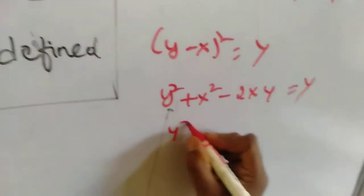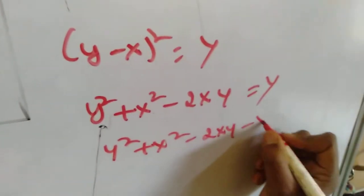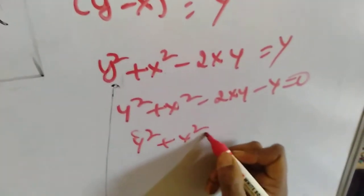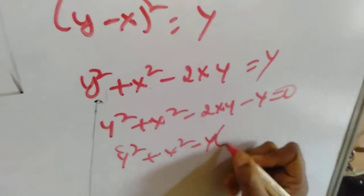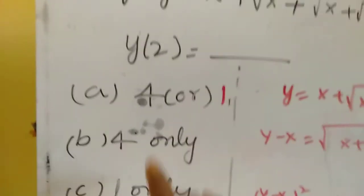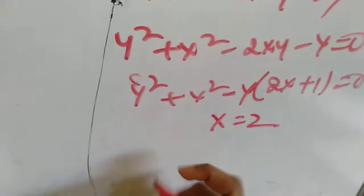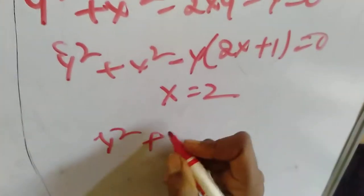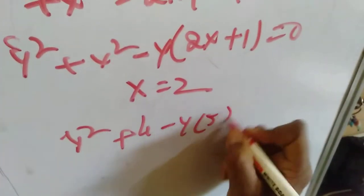Expanding, y minus x whole square gives y squared plus x squared minus 2xy equal to y. Taking y to the left side we get y squared plus x squared minus 2xy minus y equal to 0. Taking y common from the last two terms gives y squared plus x squared minus y times (2x plus 1) equal to 0. Now substituting x equal to 2, we get y squared plus 4 minus 5y equal to 0.